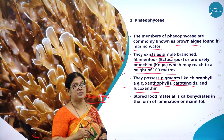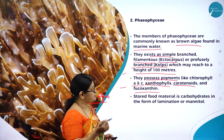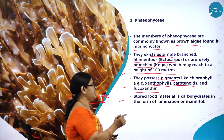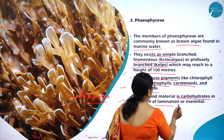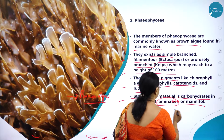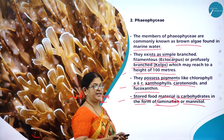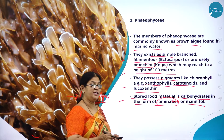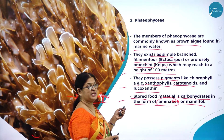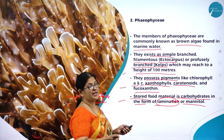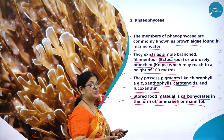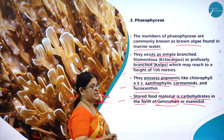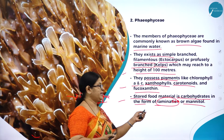They are referred to as brown algae because they possess pigments like chlorophyll A and C, along with xanthophylls, carotenoids, and fucoxanthin. Fucoxanthin is the one which gives them the brown coloration — hence the name brown algae. The stored food material is carbohydrate in the form of laminarin or mannitol.